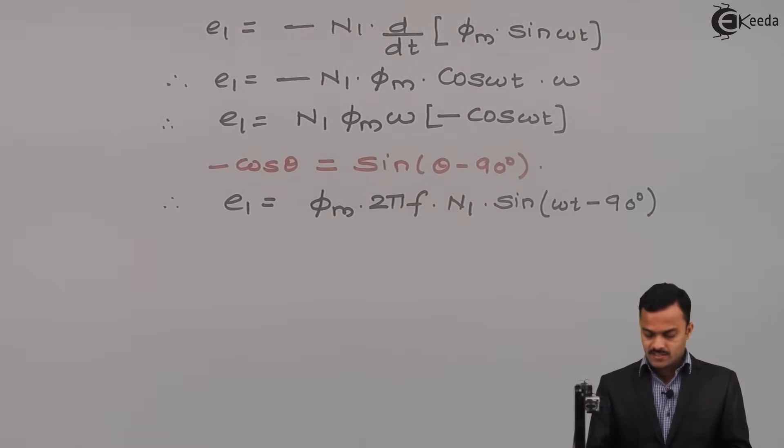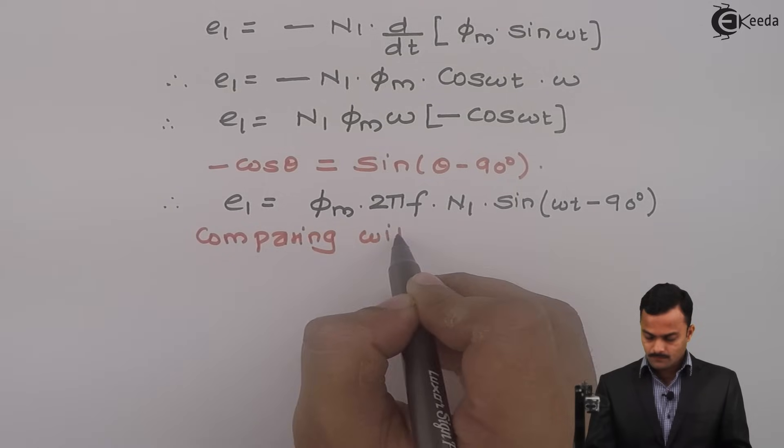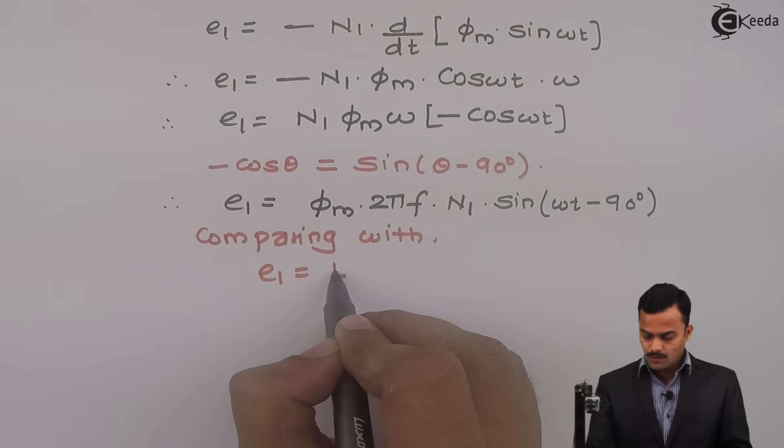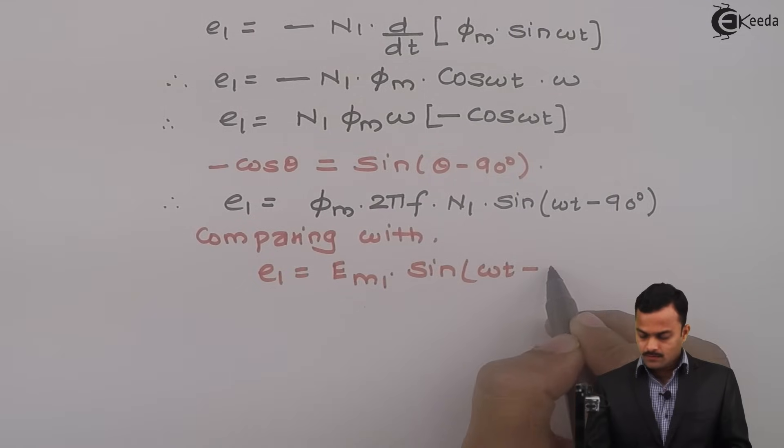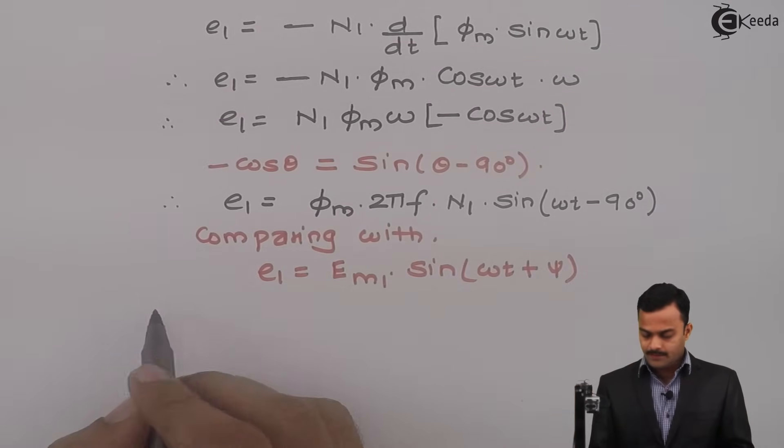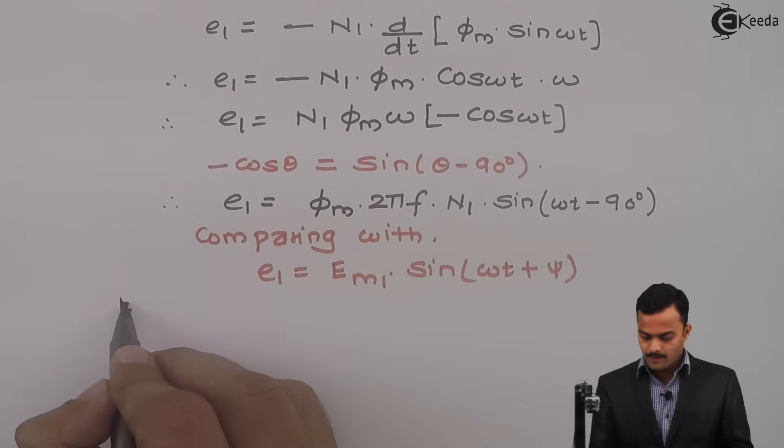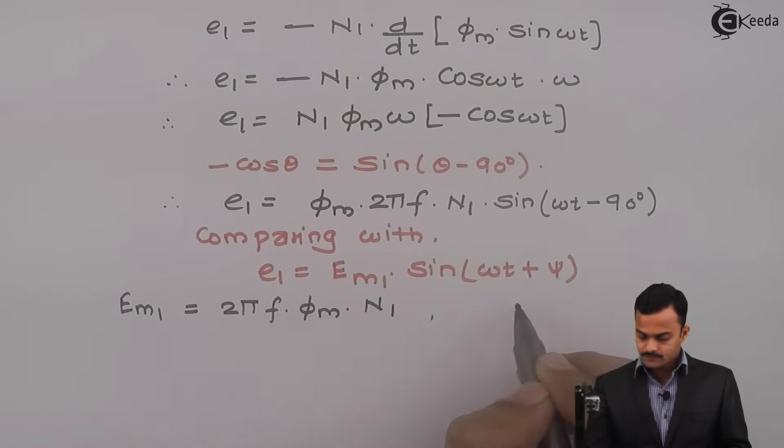This is a standard equation that can be compared with E1 equal to E1 max sin omega t plus psi. I will not use phi because that we have already used for flux. So this will be the symbol psi. If I compare, I will get E1 max equal to 2 pi f into phi m into n1 and psi equal to minus 90 degree.